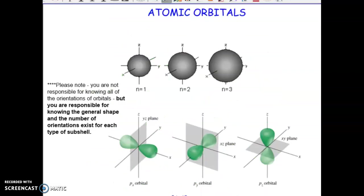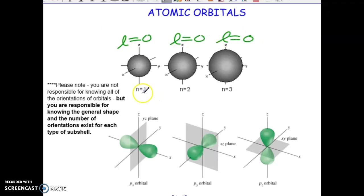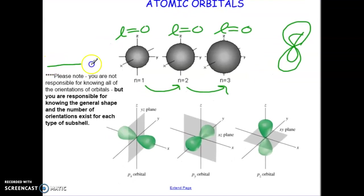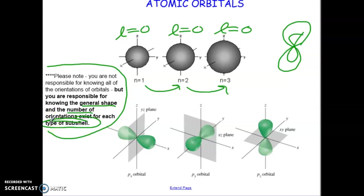Here are our energy levels and the different shapes. These are all L equal to 0 because they're spherical in shape. This is just showing you that as the energy levels increase, the size of the orbitals will also increase. So an energy level 3 P orbital will be larger than an energy level 2 P orbital. All these orbital shapes get larger the higher up in energy they are. Please note: you are not responsible for knowing all the orientations, but you are responsible for knowing the general shape and the number of orientations that exist for each subshell.